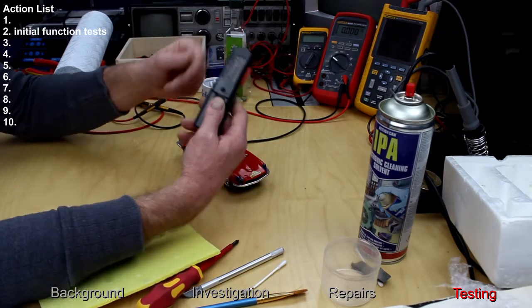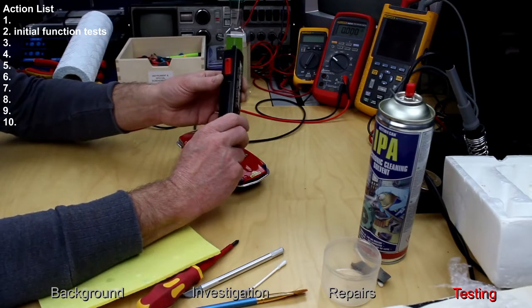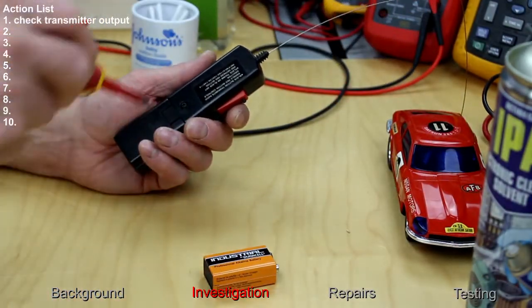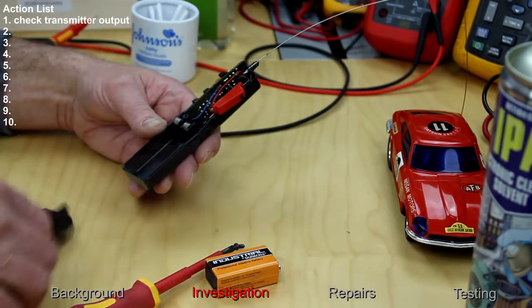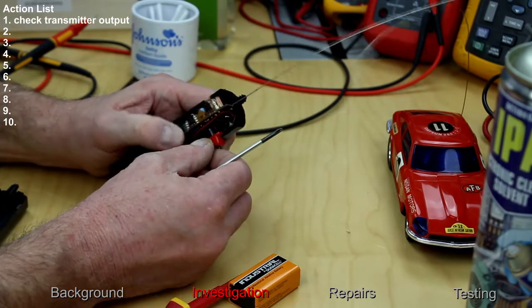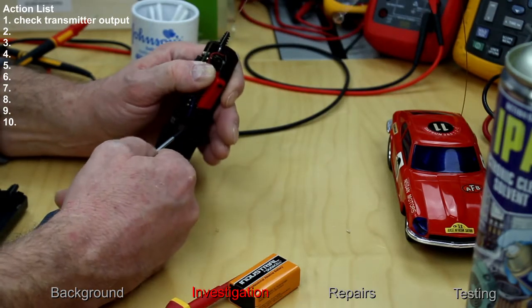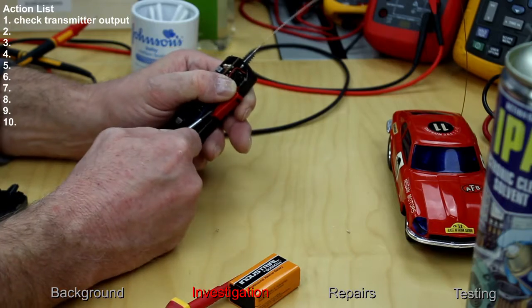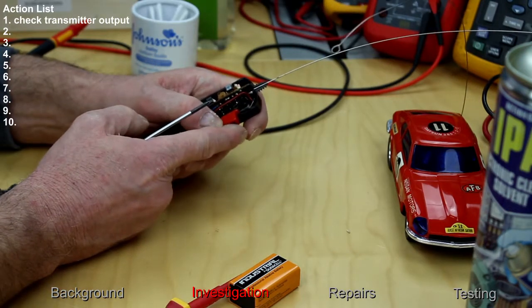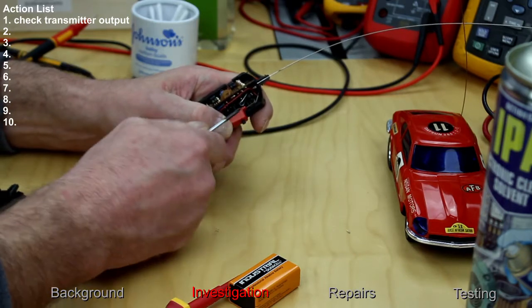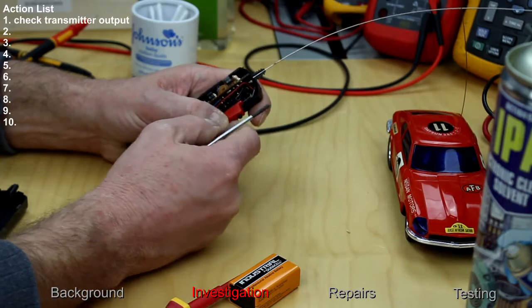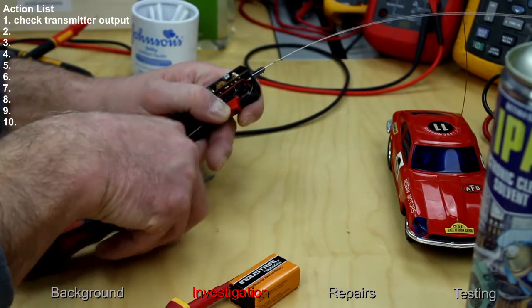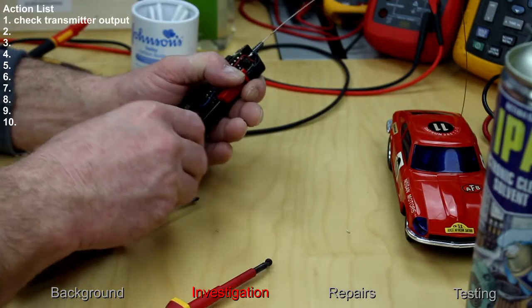I'll open up the transmitter first. Put the scope on it and see if it's transmitting the signal. Okay, this seems to have a double function. It seems to pick power up from the positive terminal through the spring. And that spring here presses on that, makes a contact, puts supply onto that. And then when you press this, it goes off there. Okay, let's just try that.